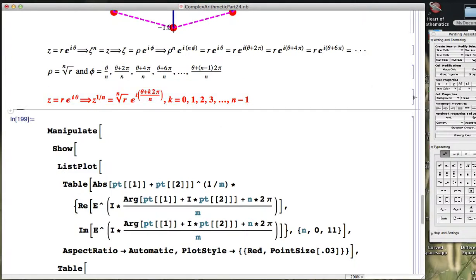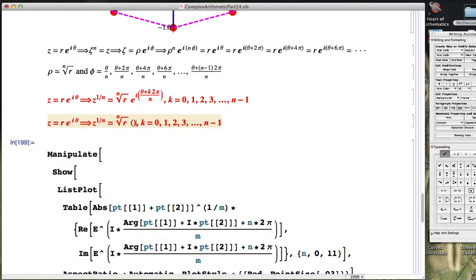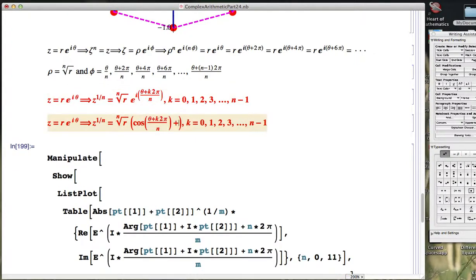We can also use Euler's formula to write this in trigonometric form involving cosine and sine. So this would be another way to write it, the set of nth roots.